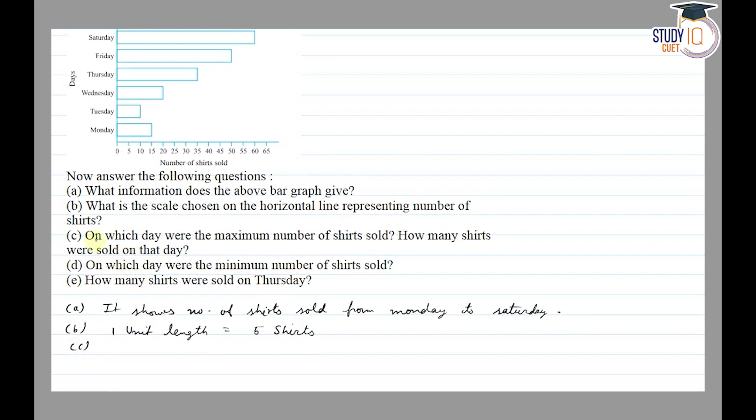In part (c) we have to find out on which day were the maximum number of shirts sold and how many shirts were sold on that day. We look at the bar graph to find the maximum number of shirts sold.